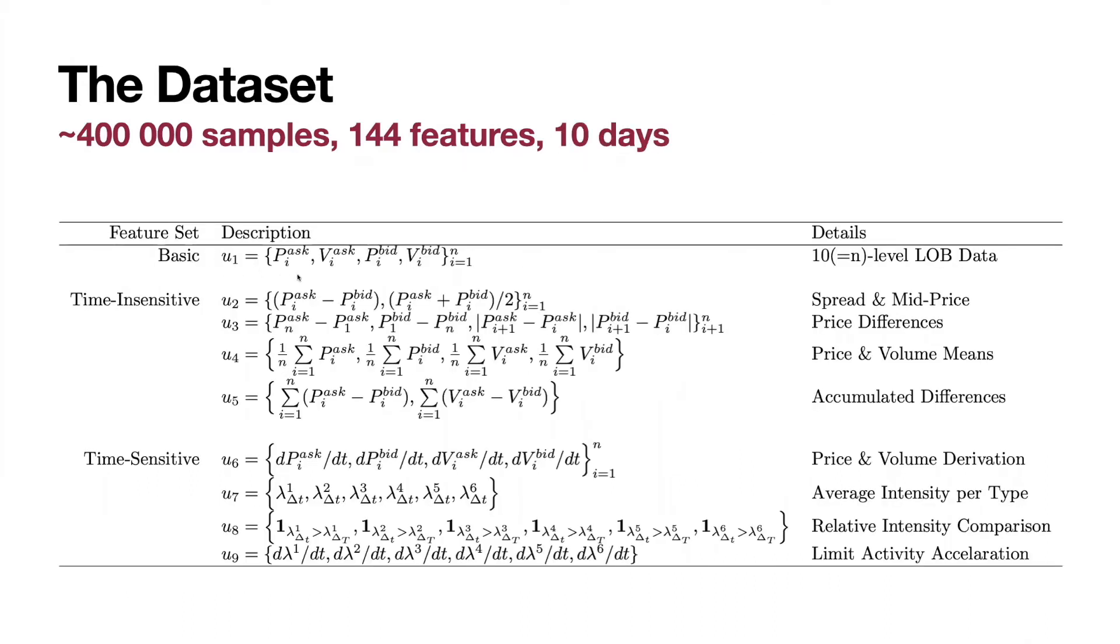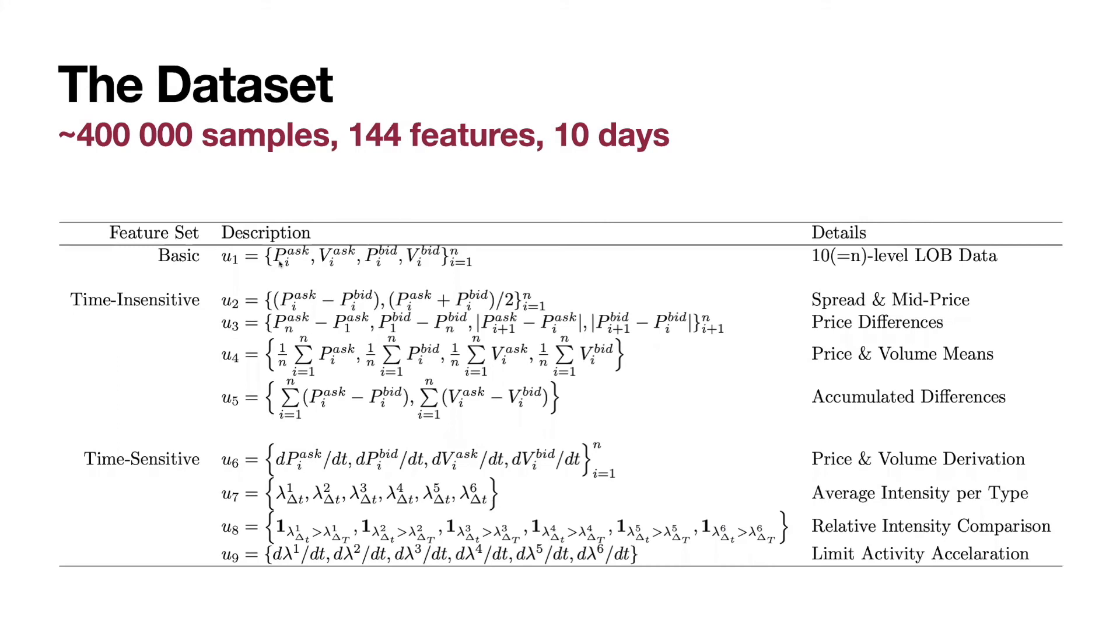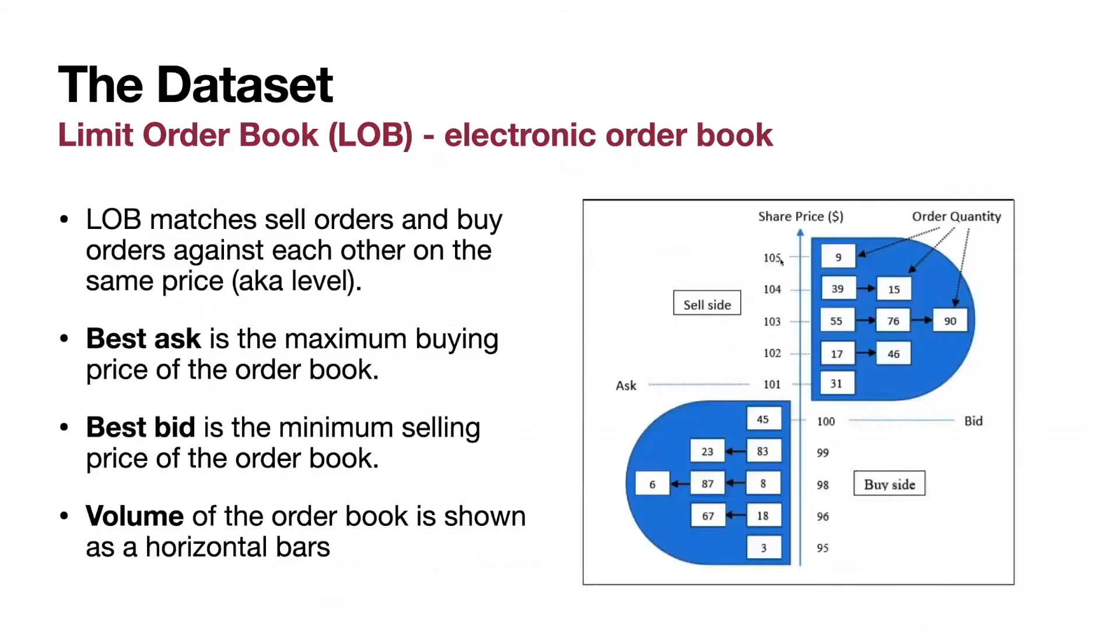Here are the features. So basic limit order book state, 10 levels for limit order book data, these 10 levels. They are simply ask price, bid price, ask volume, and bid volume. Exactly the same which you see on this image.